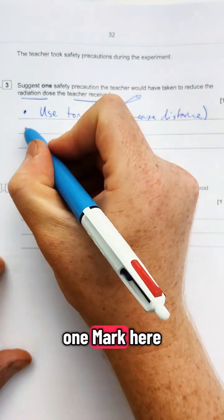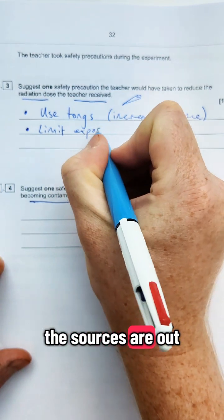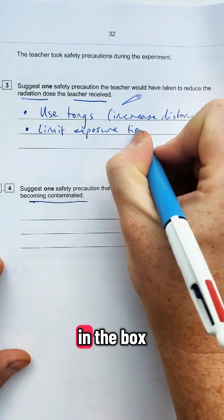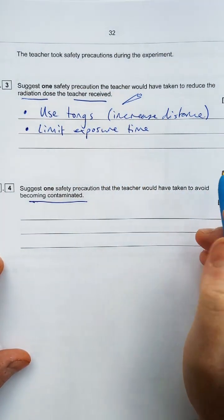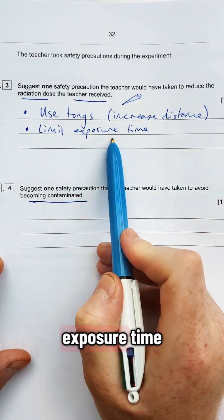You only need one thing for one mark here, but you could also talk about limiting the exposure time. So the amount of time that the sources are out. So put them in the box when not being used. You could talk about wearing a lead apron, things like that. But most of them will either involve distance or exposure time.